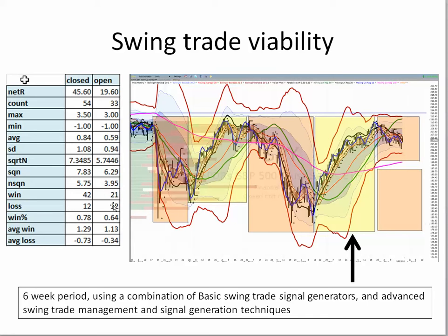If you use the square root of N to multiply to compute the system quality number, it comes in at 5.75. There were 42 wins and 12 losses, that's a win rate of about 0.78. The average win was 1.29, the average loss was minus 0.73.